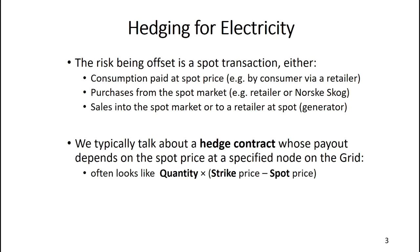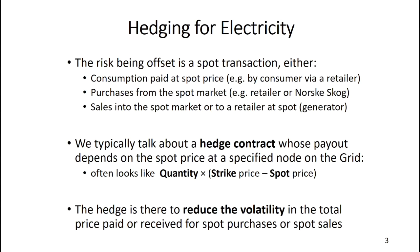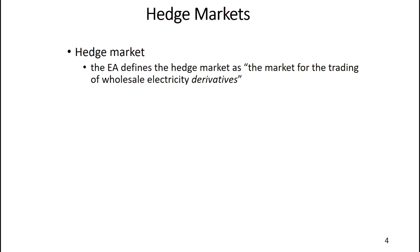We typically talk about a hedge contract whose payout depends on the spot price at a specified node on the grid, and it often looks like this: a quantity times the strike price — which is the fixed hedge price — minus the spot price. There's always a buyer and a seller with a hedge, and the hedge is there to reduce the volatility for both parties. For example, if a generator sells a hedge to a purchaser, the hedge helps reduce volatility in sales revenue and in what the consumer pays for their spot electricity.